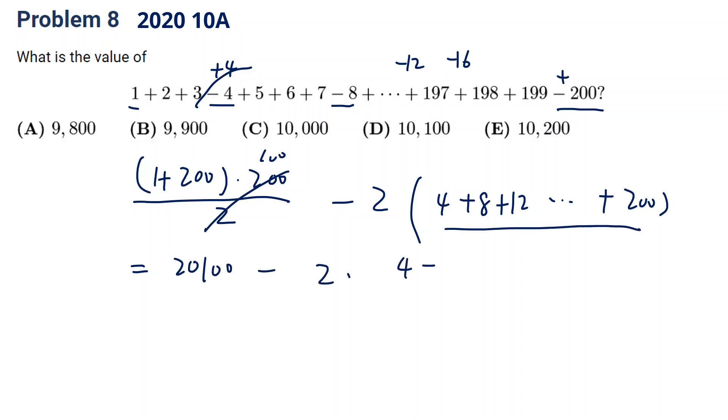Minus 2 times. The sum of these is 4 plus 200. This is another arithmetic sequence. First plus last times total number is 50 divided by 2.